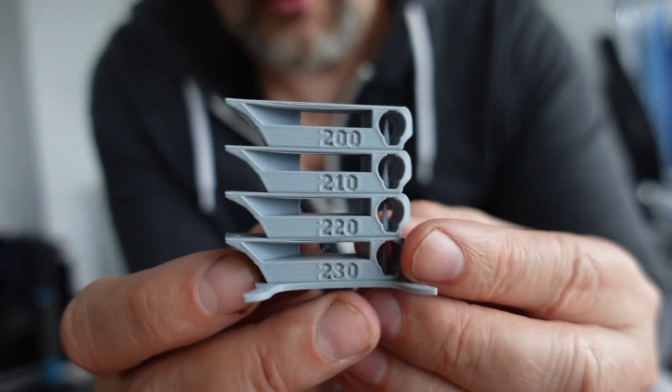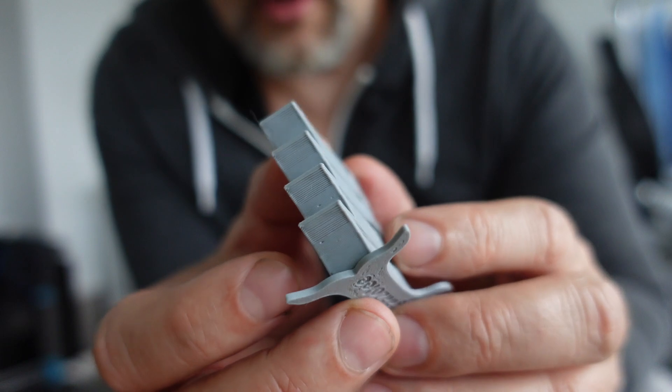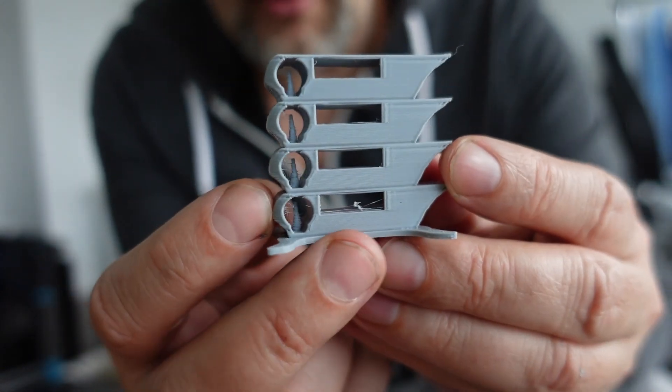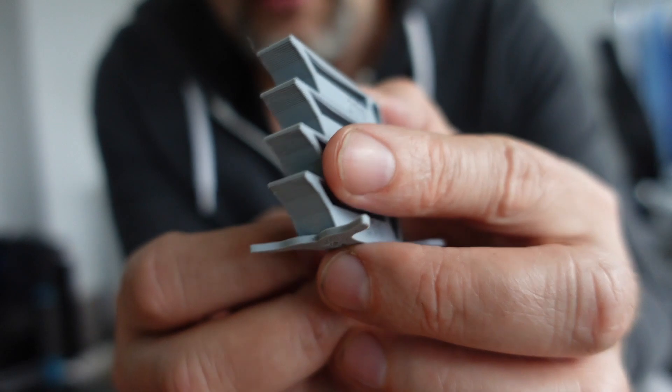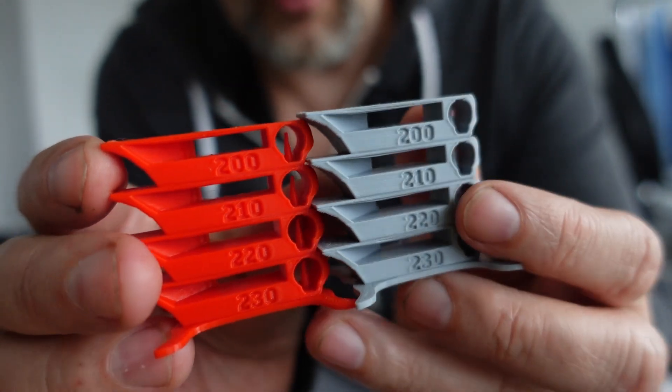This is another great temperature tower: perfect bridging, overhangs. Only one string I could see at 230 degrees Celsius, and that's the only difference compared to regular PLA. Basically both are very perfect.